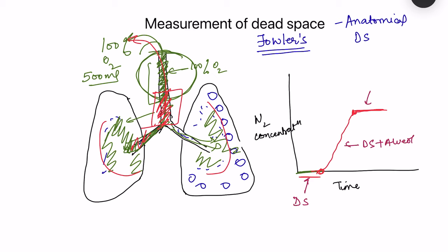To determine the dead space, in the rising portion we draw a vertical line at the midpoint such that it divides the rising curve into two equal areas. From the beginning to this vertical line, the volume of air exhaled during that time is the anatomical dead space. This technique — Fowler's method or single breath nitrogen washout — is used for measurement of anatomical dead space.